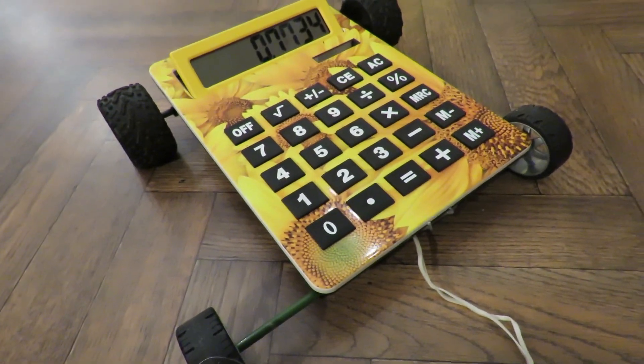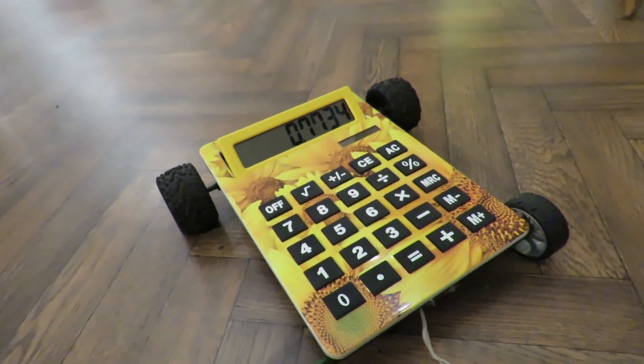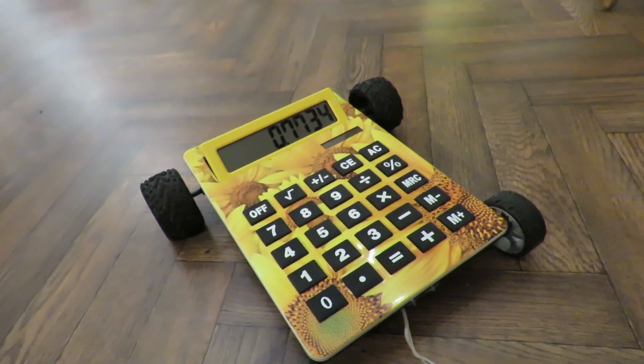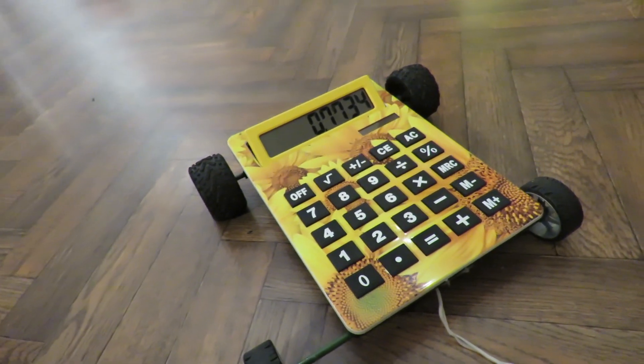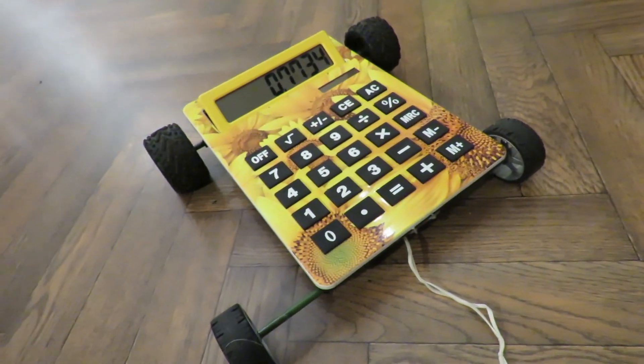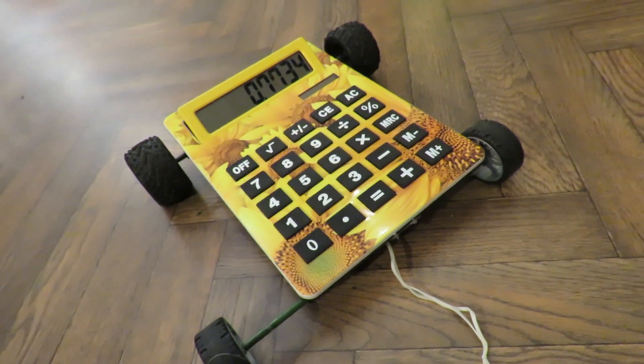So, summary time. What have we got? We've got a rubber band powered calculator. Yeah, okay. That is all it is. Just using the calculator the same way as we'd use a piece of cardboard as the chassis.